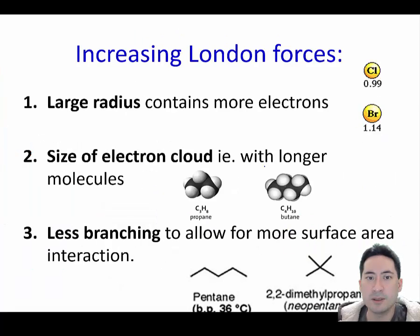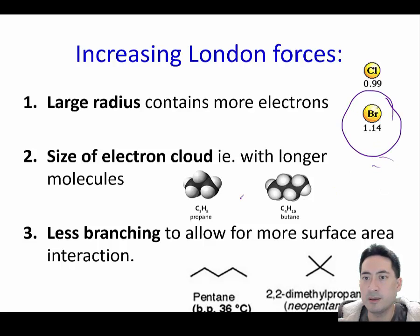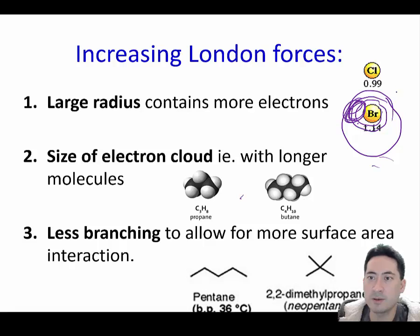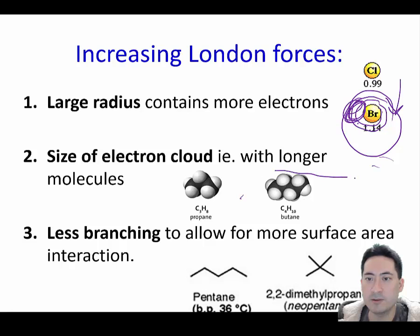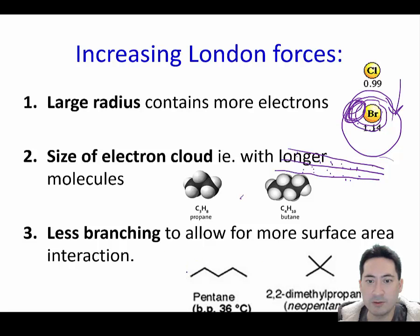How do we increase London forces? If you have a larger atomic radii, such as here, there will be more electrons, so there's a greater chance of unevenness. That's why the melting point increases as you go down. If you have long chains of hydrocarbons, they will line up with each other and have interactions with each other, which will also increase the London dispersion forces. If you have less branching, it allows them to line up more as well.